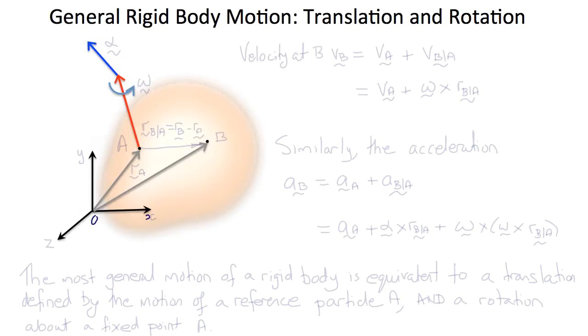So far we've considered rigid body rotations. Now let's consider a general rigid body motion which would consist of a translation and a rotation.